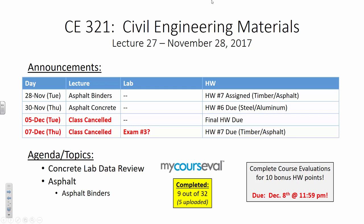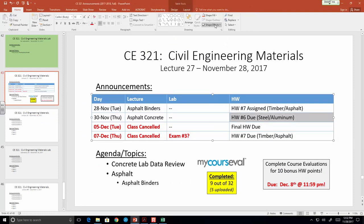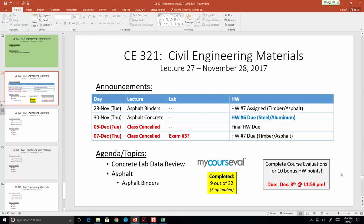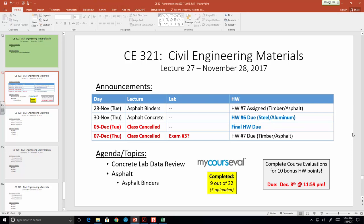Right now, homework six is due on the 30th — that's not changing. I have your final homework due on the fifth, and that's going to be locked in. What I want to talk about is homework seven and a potential change about the exam. Your exam is currently scheduled for Tuesday the 12th, but I'm curious if you're interested in potentially doing the exam during dead week.